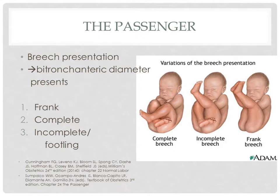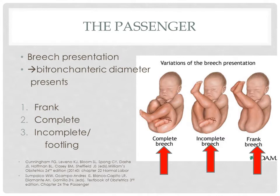For breech presentation, the bitrochanteric diameter is the one presenting. We have three types: frank, complete, and incomplete breech. For frank breech, the fetal thighs are flexed and the knees are extended. For complete breech, both the fetal thighs and knees are flexed. In incomplete breech, the thighs are flexed but only one knee is flexed and the other is extended. Sometimes the foot prolapses through the birth canal — that is why this is sometimes called footling breech.